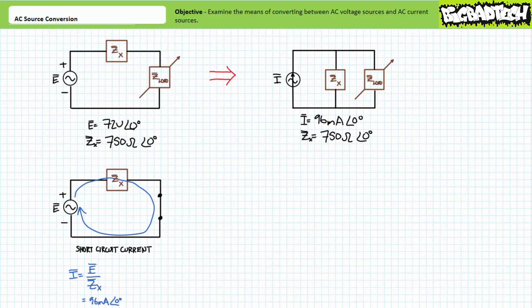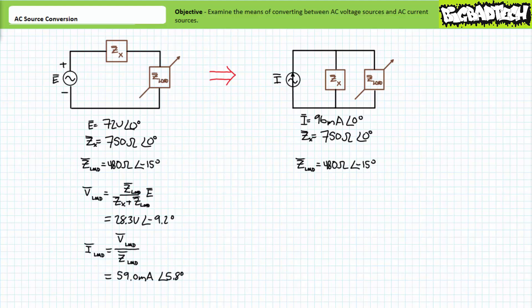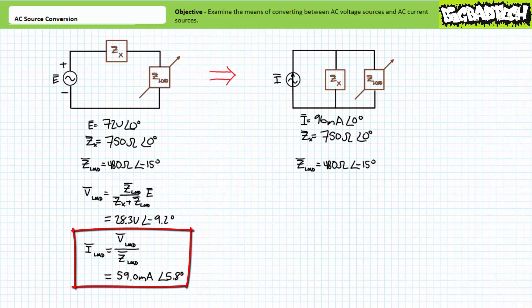If everything I've said is true, these two different source configurations will induce the same voltage drop across and current through for a range of variable load impedances. Let's say we set our variable load impedance to 480 ohms at an angle of negative 15 degrees. Our original configuration is a perfect setup for the AC voltage divider rule — we know applied voltage and we know both impedances in the series combination of two elements. An application of the AC voltage divider rule demonstrates the voltage across the variable load impedance will be 28.3 volts at an angle of negative 9.2 degrees. A subsequent application of Ohm's Law demonstrates current through the variable load impedance will be 59.0 milliamperes at an angle of 5.8 degrees.